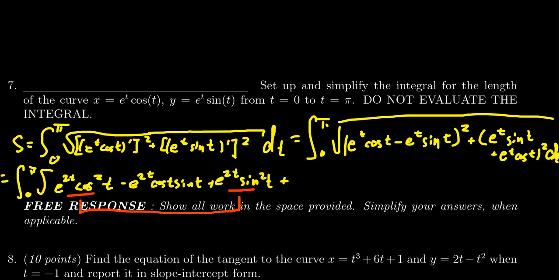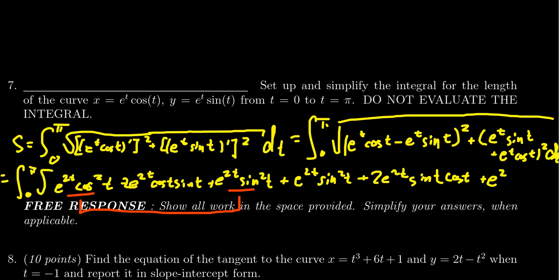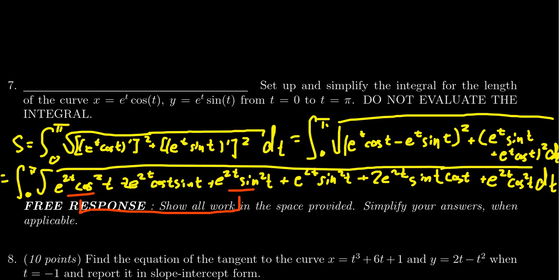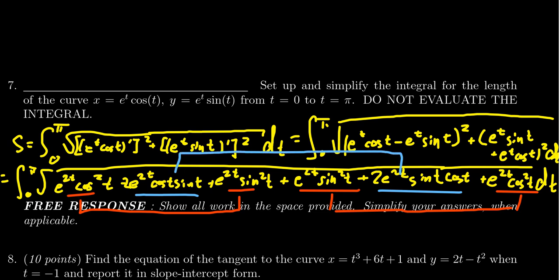FOILing the second squared expression gives something very similar: e to the 2t sine squared t, plus 2e to the 2t sine t cosine t, and then e to the 2t cosine squared t. Notice we have another e to the 2t sine squared and an e to the 2t cosine squared — those likewise combine to give e to the 2t. Also, the negative 2e to the 2t cosine t sine t and the positive 2e to the 2t sine t cosine t are opposites, so they cancel each other out.